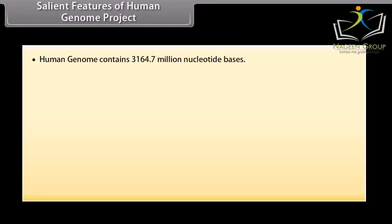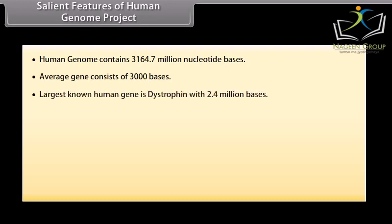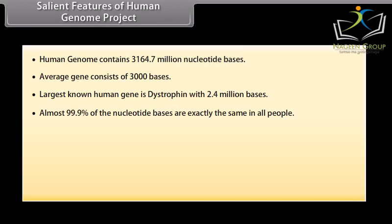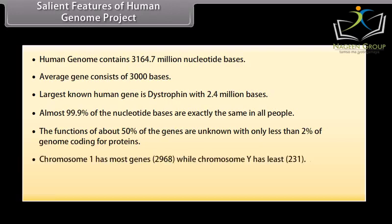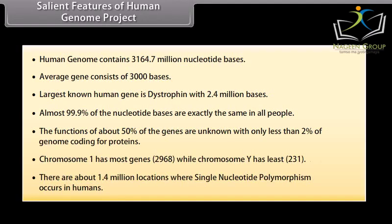The human genome contains 3,164.7 million nucleotide bases. Every gene consists of 3,000 bases on average. The largest known human gene is dystrophin with 2.4 million bases. Almost 99.9% of nucleotide bases are exactly the same in all people, with only less than 2% of the genome coding for proteins. Chromosome 1 has the most genes — 2,968 — while Chromosome Y has the least — 231. There are about 1.4 million locations where single nucleotide polymorphism occurs in humans.